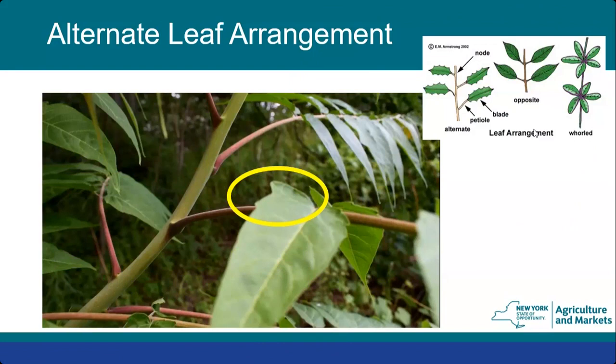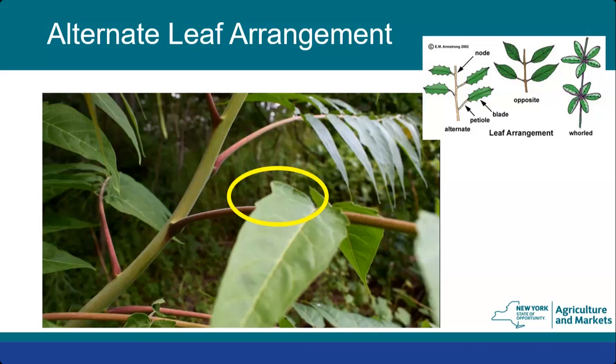One telltale sign identifying tree of heaven compared to lookalikes: the leaf arrangement is alternate, and each leaflet has a small notch or nub at the base — where the leaflet meets the petiole. Other similar plants like ash, black walnut, and sumac do not have this notch. Looking at an individual leaflet and seeing that particular notch is a telltale sign that you're looking at tree of heaven. The leaflet stems also often have a burgundy or reddish color.